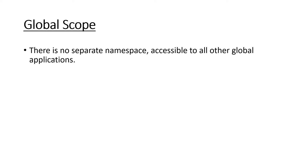Now, what is global scope? In global scope there is no separate namespace — there's no particular naming structure you need to follow. Global scope is accessible to all other global applications. As the term implies, it is globally available to everyone with the appropriate level of access.